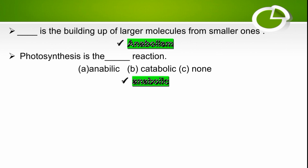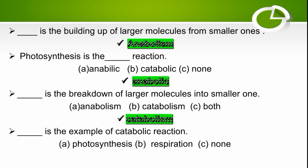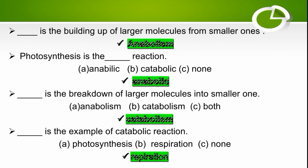Catabolism is the breakdown of larger molecules into smaller ones. Anabolic and catabolic are opposite to each other. Respiration is an example of a catabolic reaction, in which larger molecules are broken down into smaller ones, so the right option is respiration.